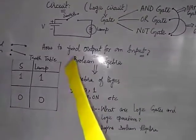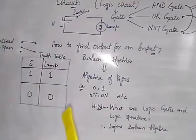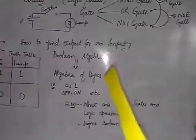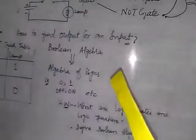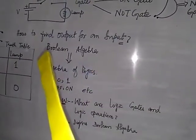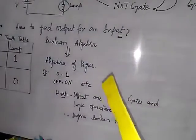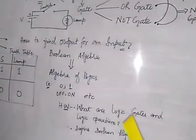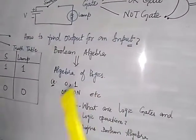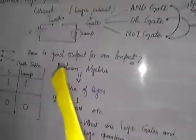Now the question arises that if we know the input of a situation, how are we going to know about the output of that situation? For this purpose, we have an algebra or branch of mathematics which is known as Boolean algebra, also known as algebra of logic. According to this algebra, we have different forms of combinations of input which give different forms of output such as zero, one, off and on. And it was given by the mathematician Boolean.